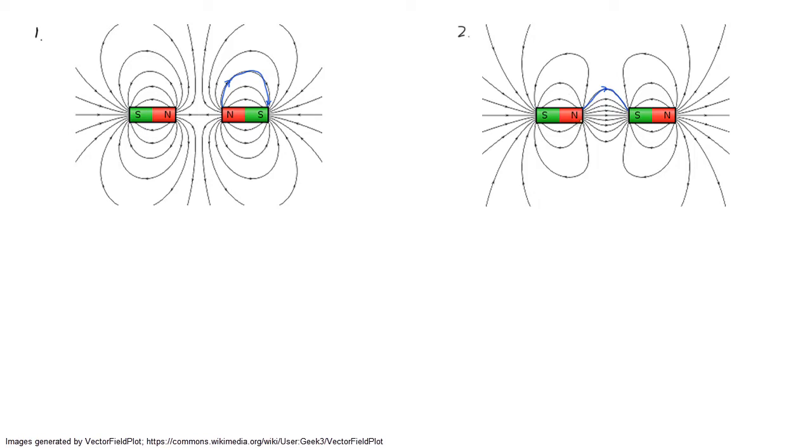However, one of the other lines comes out of the north pole of the left magnet and goes into the south pole of the left magnet. So it doesn't matter if the field line goes into the left magnet's south pole or the right magnet's south pole.